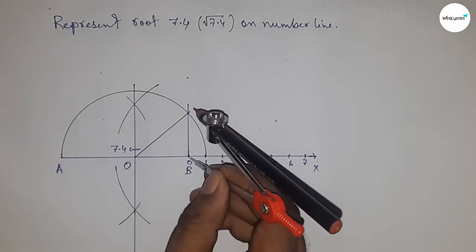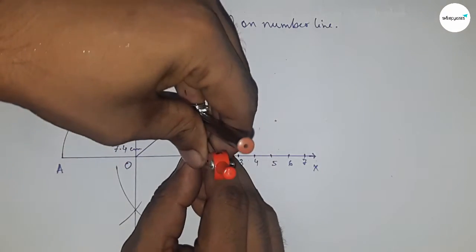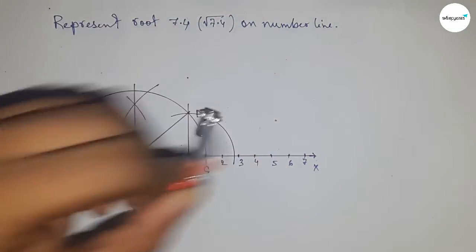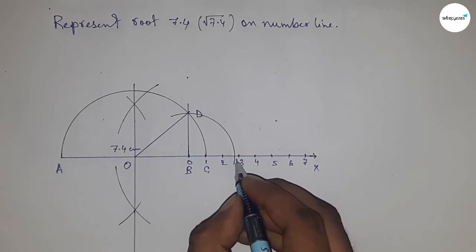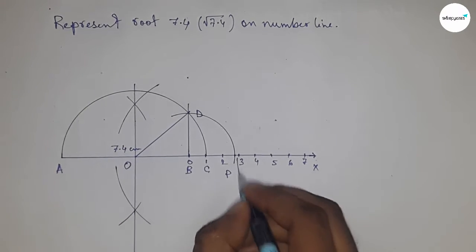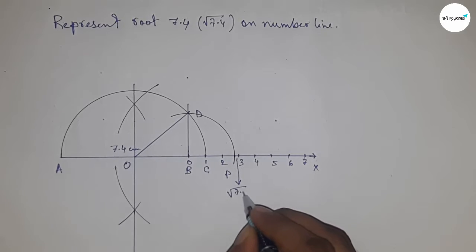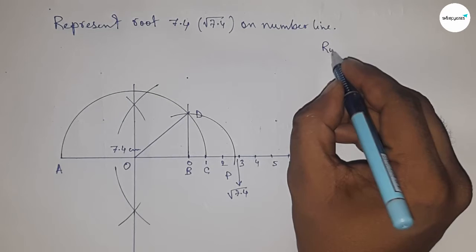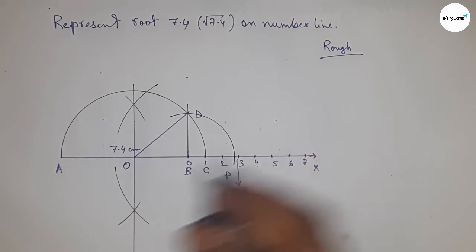Now taking the length BD by compass to draw an arc which meets the number line at point P. This is the representation of root 7.4 on the number line. Now discussing the back calculation of root 7.4.